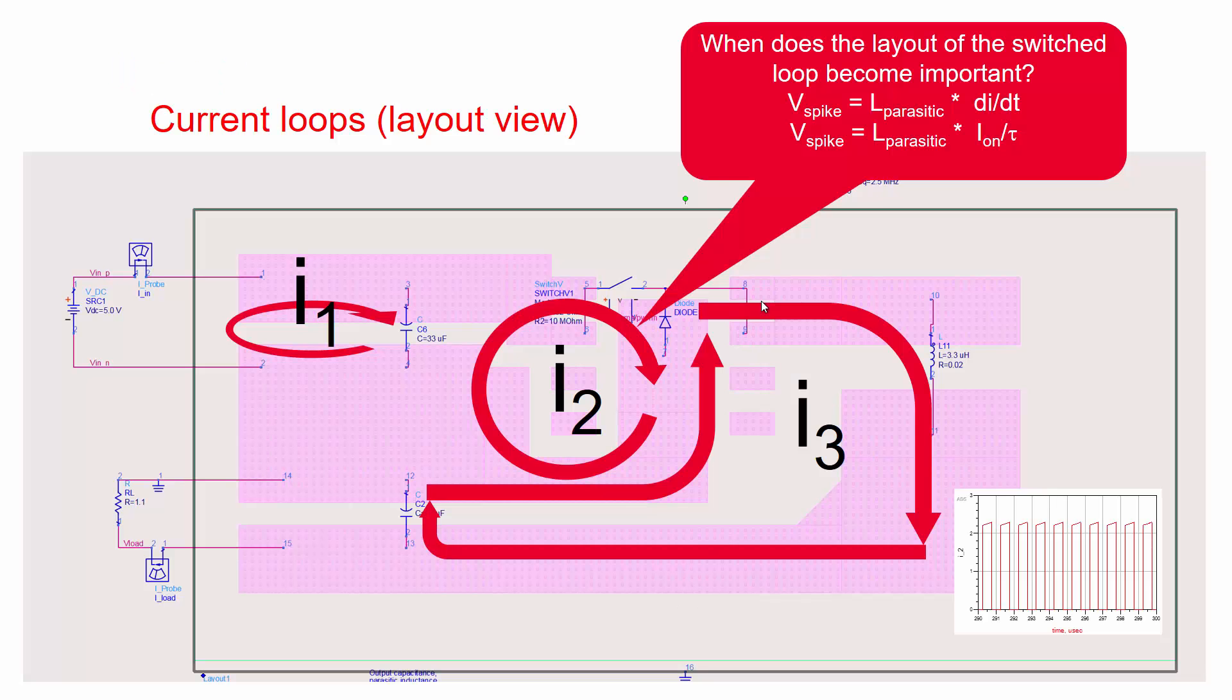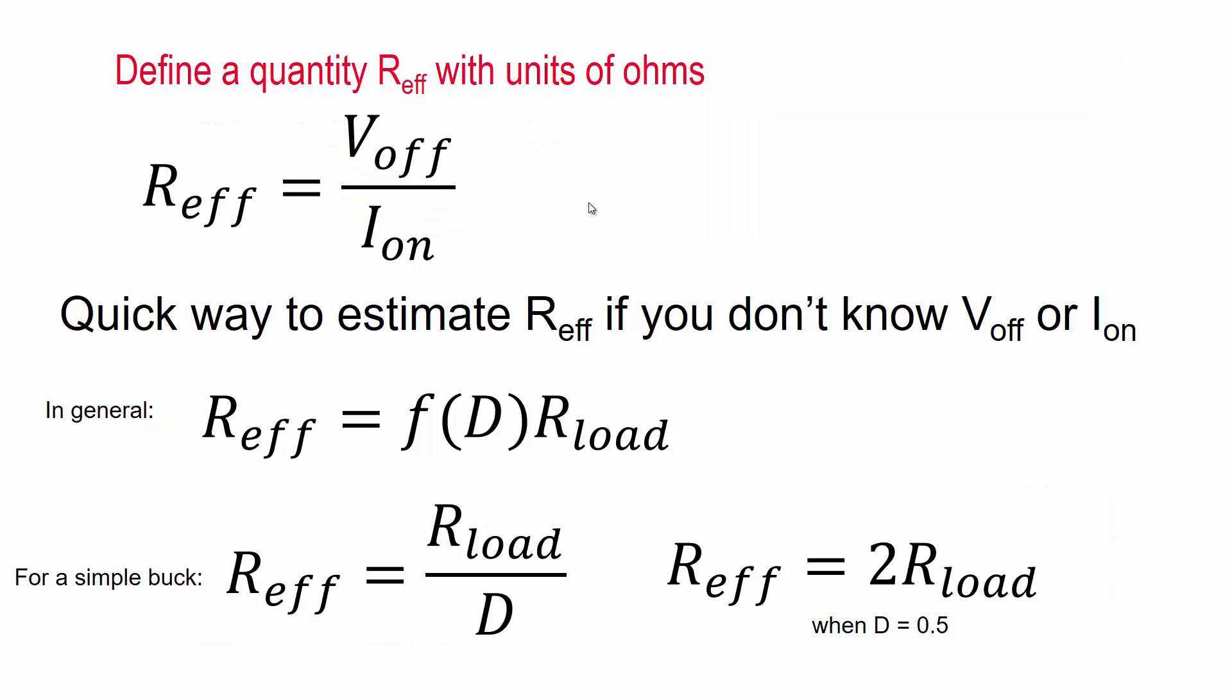So we start our derivation with the inductor equation V_spike equals L_parasitic times Di/dt. The current goes from zero to I_on in the edge rise time, τ. So Di/dt is simply I_on divided by τ.